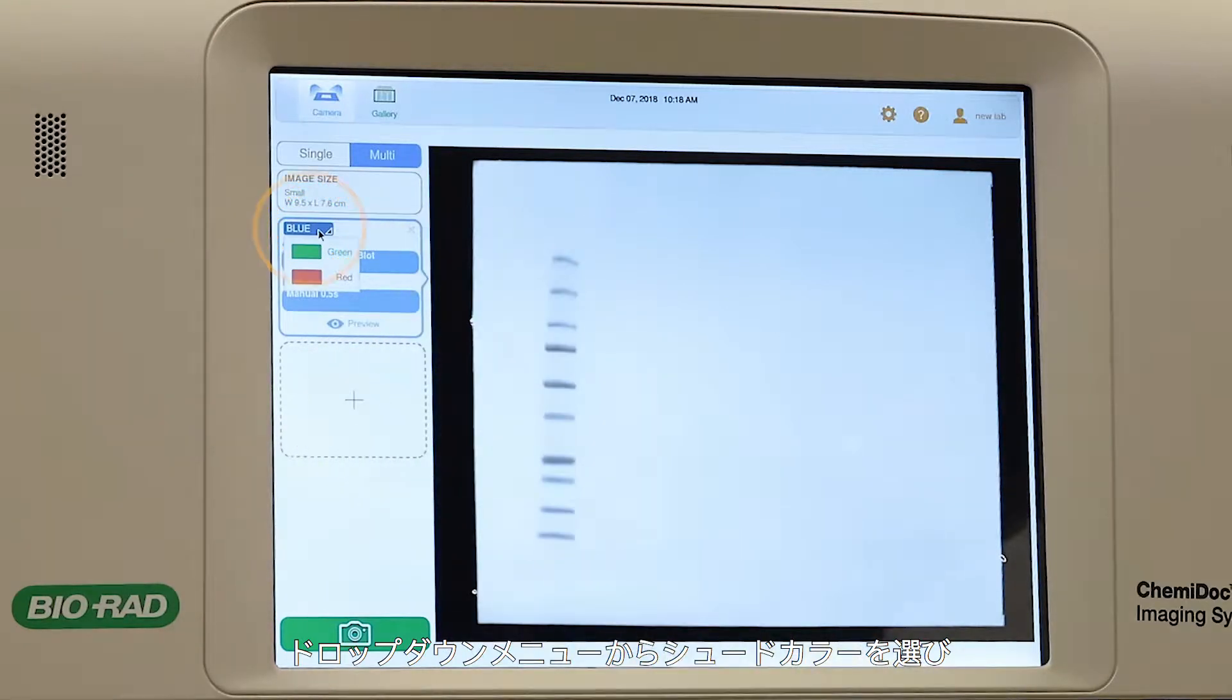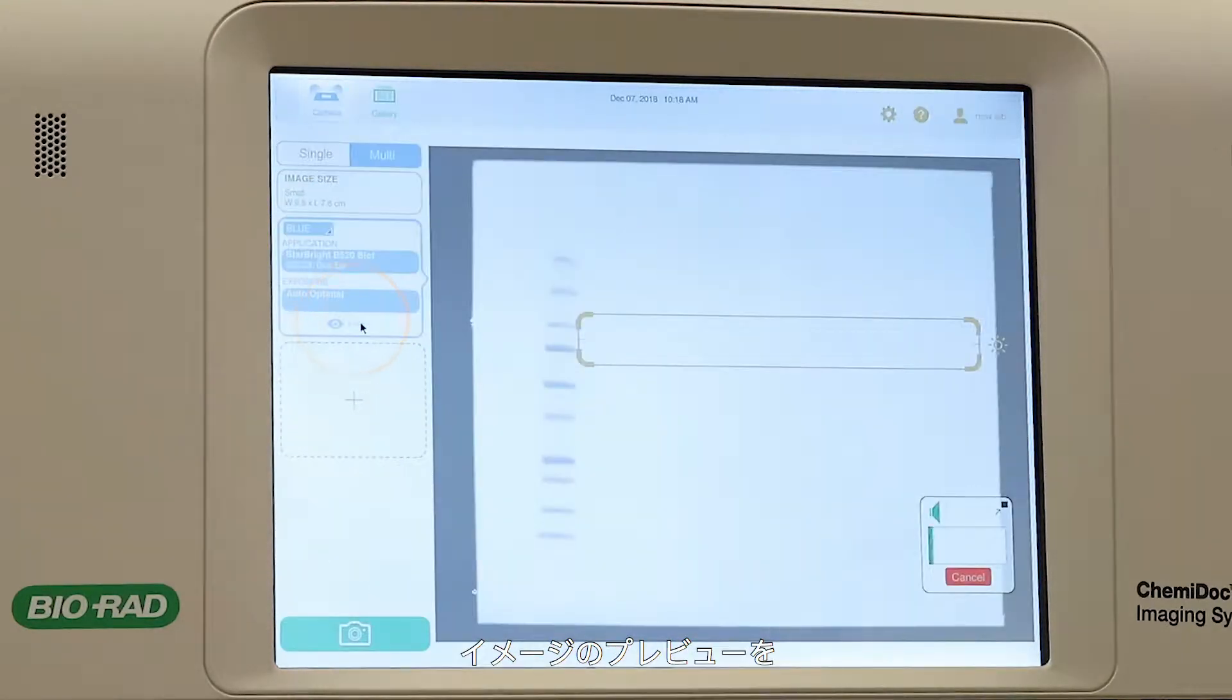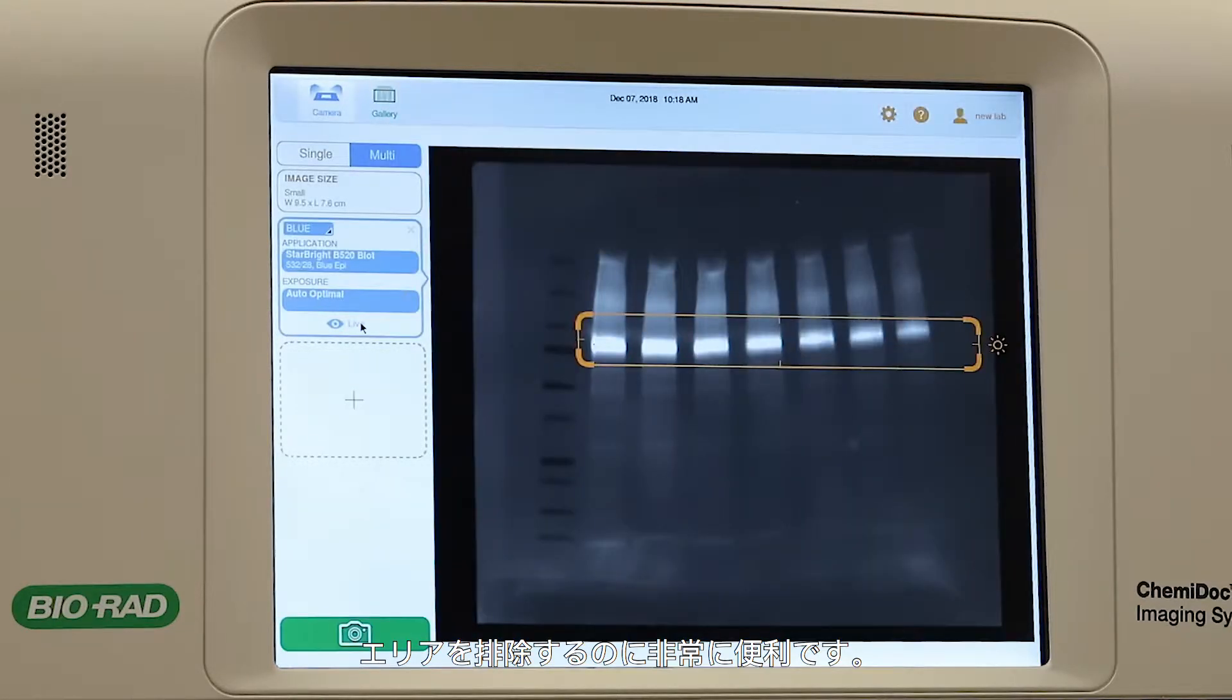Select the pseudo-color from the drop-down menu. You can take a preview of your image and set a region of interest. This can be very useful for excluding bright areas that you don't want to quantify, such as your marker. You can choose between entering your exposure time or enabling automatic detection of your bands.